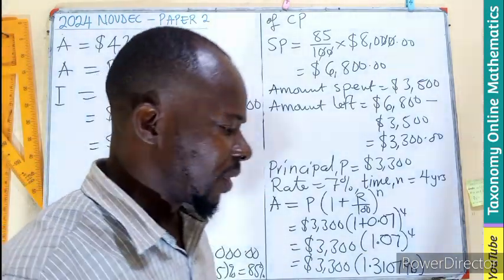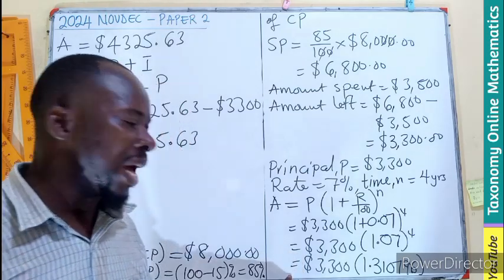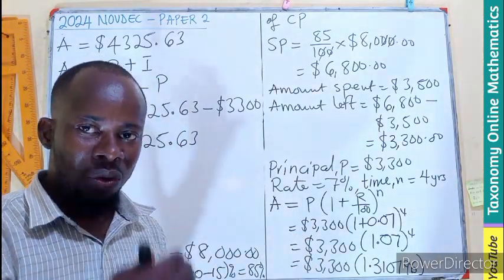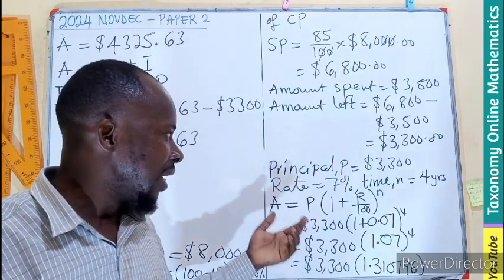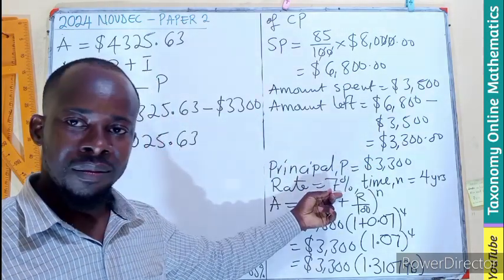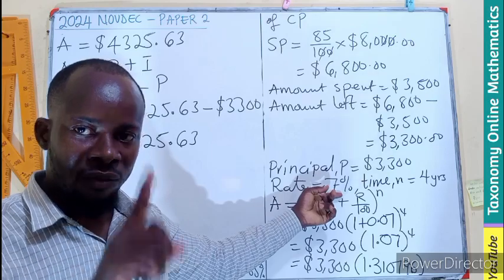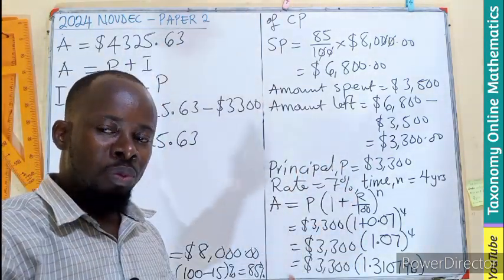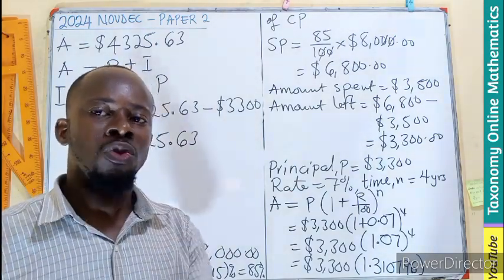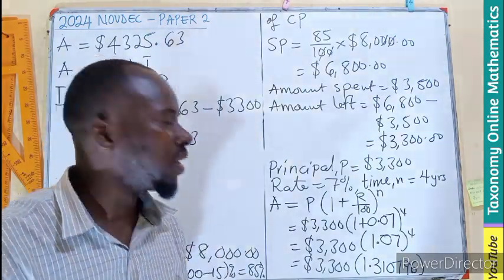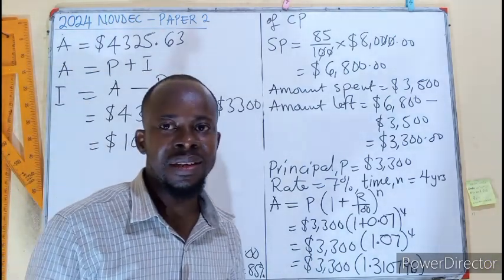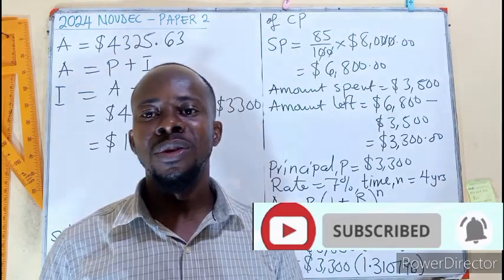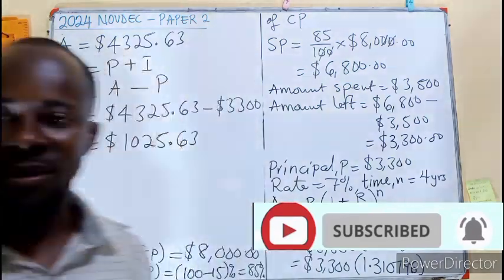The concept is clear. Instead of using the direct formula, we can also find the interest one year at a time — meaning calculate the interest for year one, then add it onto the principal to become the new principal for the next year, and repeat for 4 years. You will still arrive at the same answer. Thanks for watching — like, share, comment and subscribe.